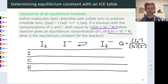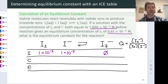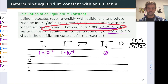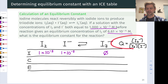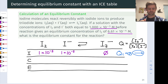In the initial conditions, we have some I₂, some I⁻, and no I₃⁻. No mention of I₃⁻ in the initial conditions, so we're going to assume there's nothing there — zero moles per liter of product. This means the value of Q initially is equal to zero, and so the reaction necessarily is going to go forward. We only have reactants in the reaction mixture to start.